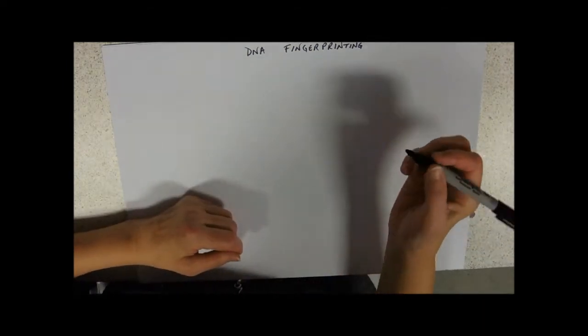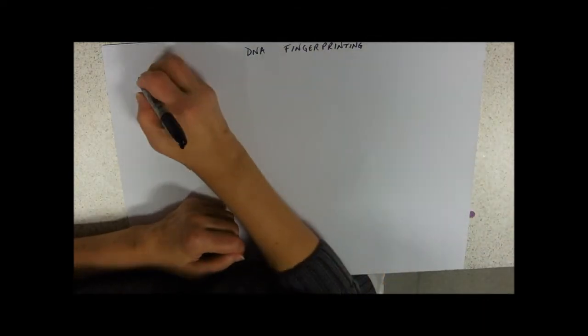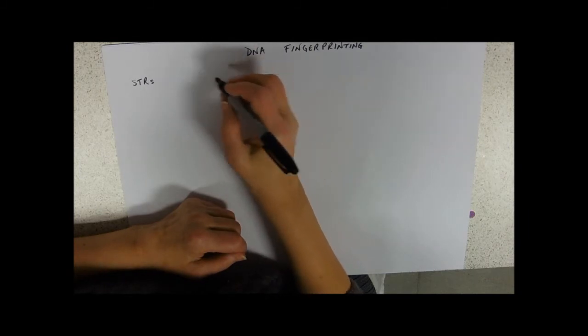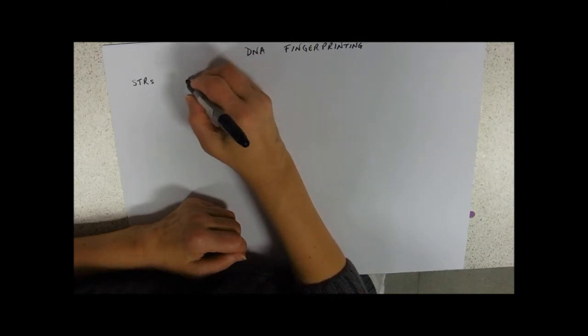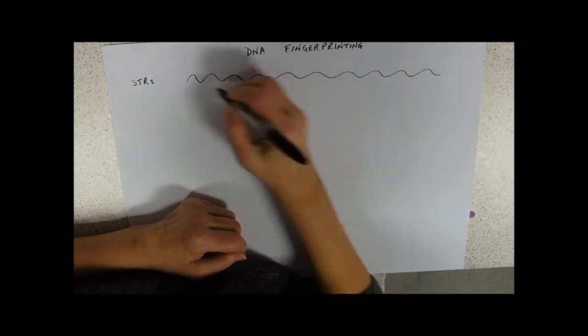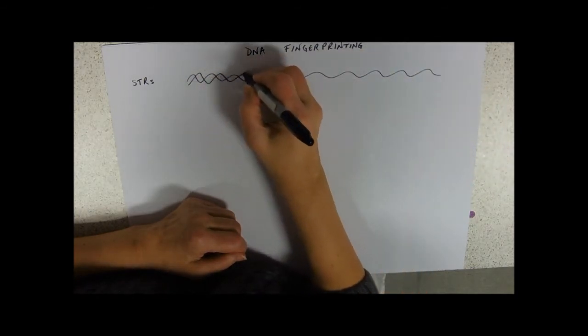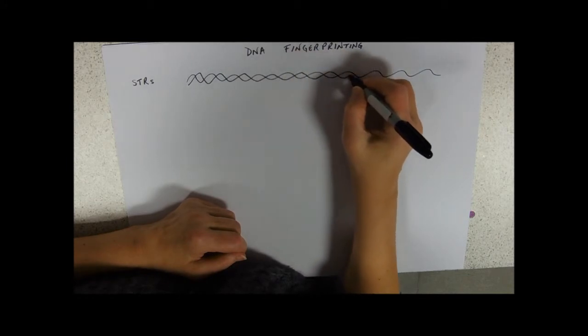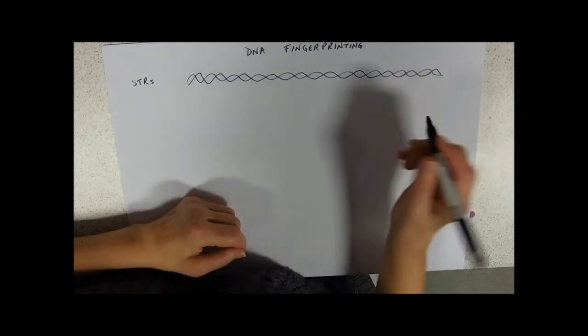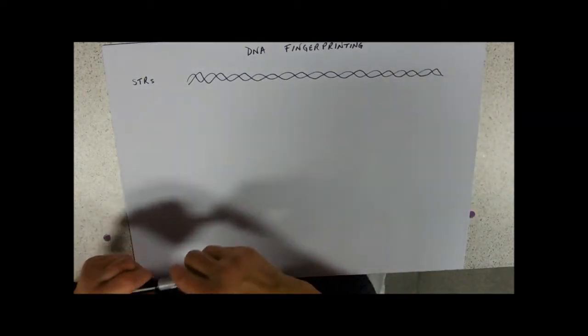Now the bits of DNA that he was looking at are what we call short tandem repeats, or STRs. Now if you think about your DNA, I'll just draw a little molecule of DNA there.